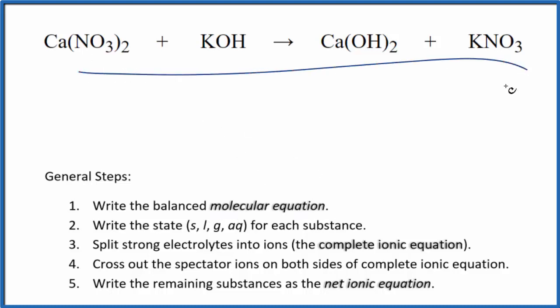This is the molecular equation. I can see right away I have these two nitrate ions and just one over here. So I'm going to put a two in front of the KOH. That gives me two nitrate ions. Now I have two potassiums.